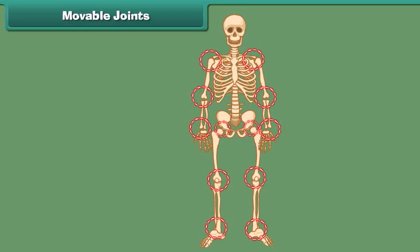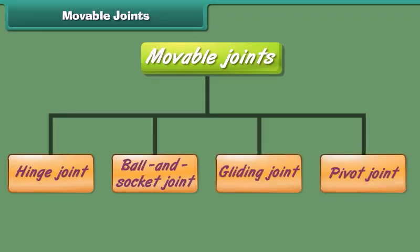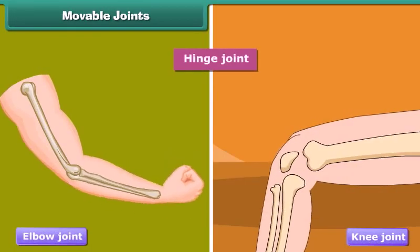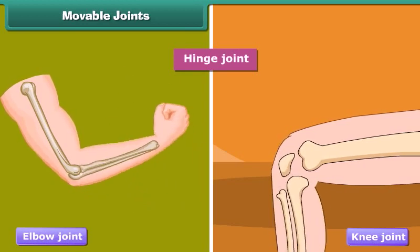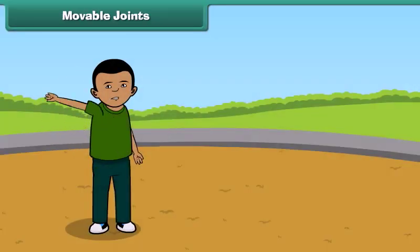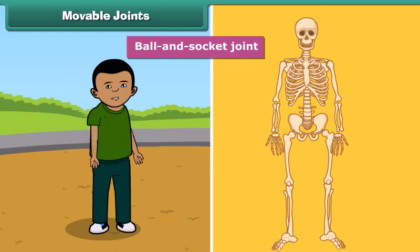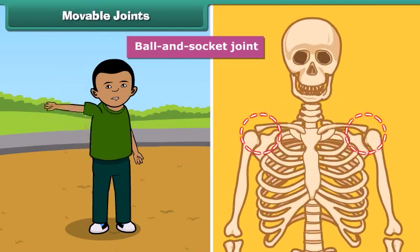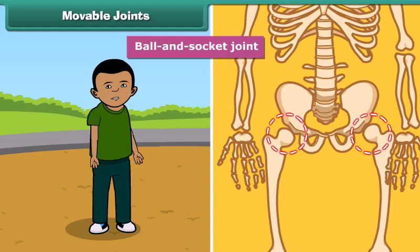Most movable joints allow free movement of the body parts, whereas in some joints only a little movement is possible. Moveable joints are grouped into four types on the basis of movement. Hinge joints are joints which can be bent in only one direction — for example, the elbow joint and knee joint. The joints which join the bones to make circular movement possible are called ball and socket joints — for example, the bone in the upper arm is fitted to the shoulder bone by a ball and socket joint. Similarly, the thigh bone is fitted to the hip bone by a ball and socket joint.